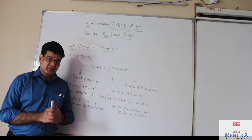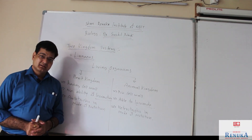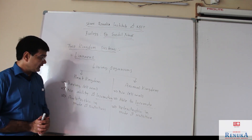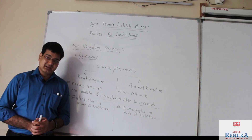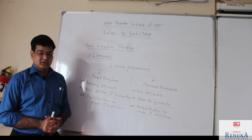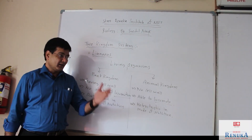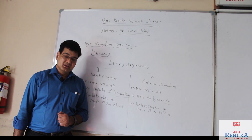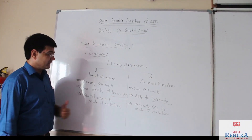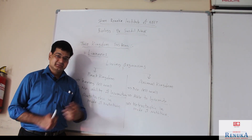If we say about Euglena, it has the ability to locomote as it has a flagella for locomotion, but it also has the ability to produce its own food. So Euglena cannot be classified as a plant or animal in this system.